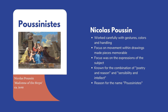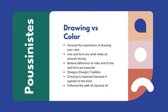The group called the Poussinists were named after Nicholas Poussin, who was an artist known for working very carefully with gestures and colors. He put his main focus on movement within drawings and the expressions of the subject, which made his pieces memorable and known for their combination of poetry and reason, as well as sensibility and intellect. In the debate of drawing versus color, the Poussinists favored the importance of drawing over color, believing that line and form are essential to what makes an artwork strong.